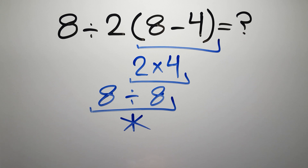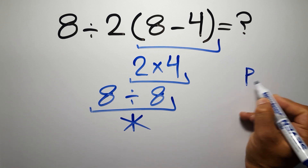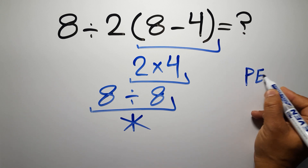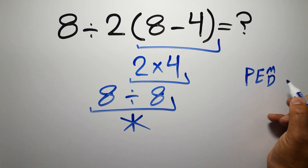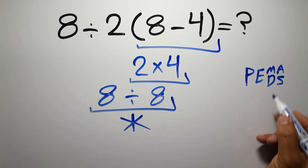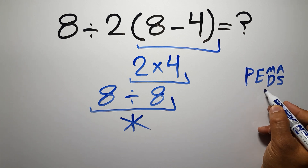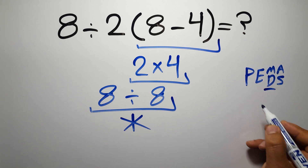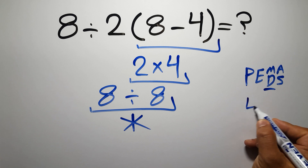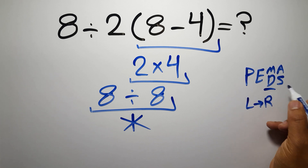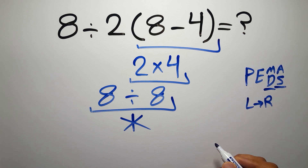According to the order of operations, first we have to do parentheses, then exponents, then multiplication or division, and finally addition or subtraction. Remember that multiplication and division have equal priority and we have to work from left to right, and the same applies to addition and subtraction.